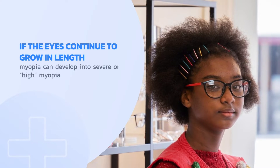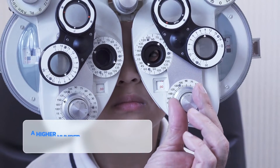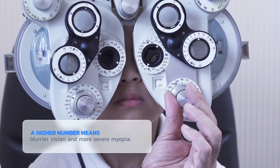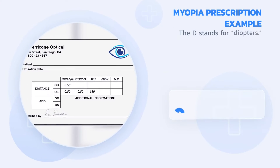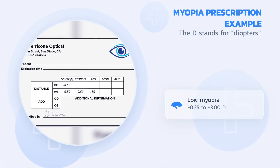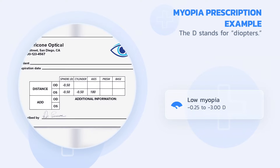If a person is nearsighted, their eyeglasses prescription will have a minus sign in front of a number. A higher number means blurrier vision and more severe myopia. For example, someone with low myopia would have a vision prescription between negative 0.25 and negative 3.00D, which stands for diopters.